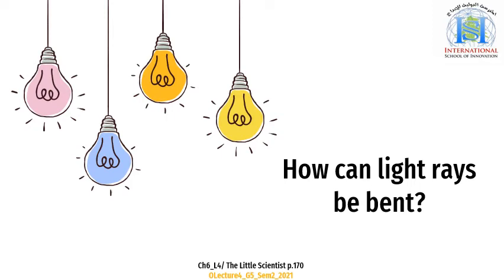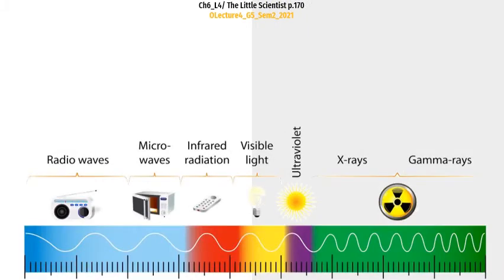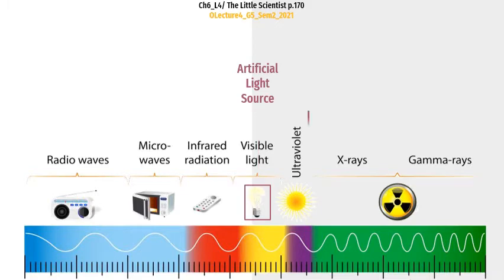Hello, my super smart kids. How are you all doing? Welcome to a new science lecture video, and we're still talking about light. Light is a kind of energy made of electromagnetic waves that travel through space in straight lines. The electric bulb is an artificial light source; the sun is a natural light source. These light sources provide us with white visible light — the light that we can see with our eyes.